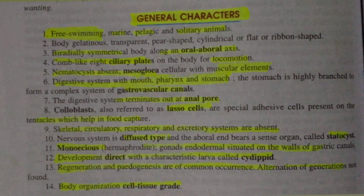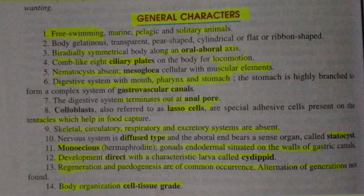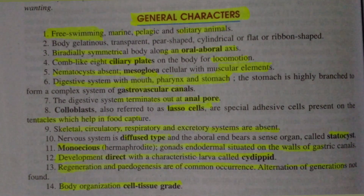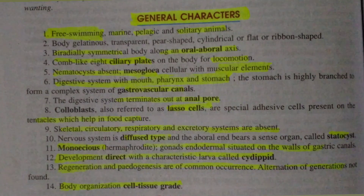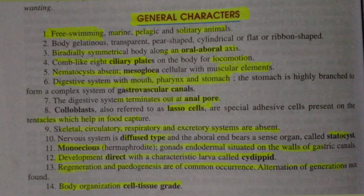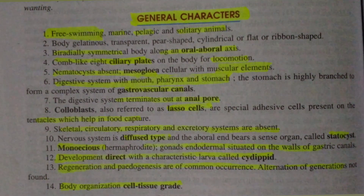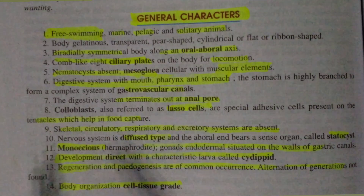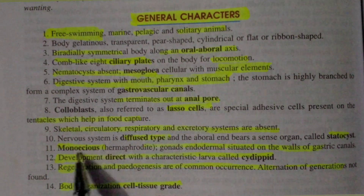The alternation of generation is not found in Ctenophora. Alternation of generation means the alternation between sexual and asexual reproductive life stages. Ctenophora is at the cell-tissue grade of organization. Important features include the comb-like ciliary plates, mesoglia, gastrovascular canal, colloblasts, monoecious nature, and cell-tissue grade.